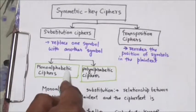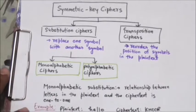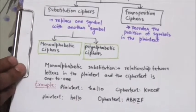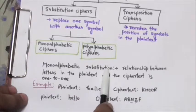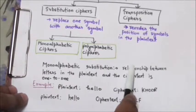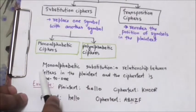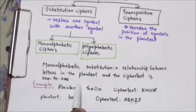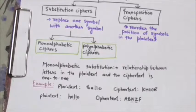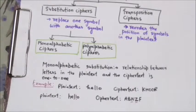In mono alphabetic substitution, the relationship between the letters in the plain text and the cipher text is 1 to 1. This means that a character or symbol in the plain text is always changed to the same character or symbol in the cipher text, regardless of its position in the text.